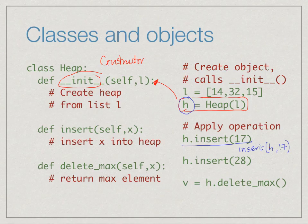The next line says apply to the heap h the function insert with the value 28. And then for instance, we can ask h to return the maximum value by saying h.delete_max() and store the return value in the name v.